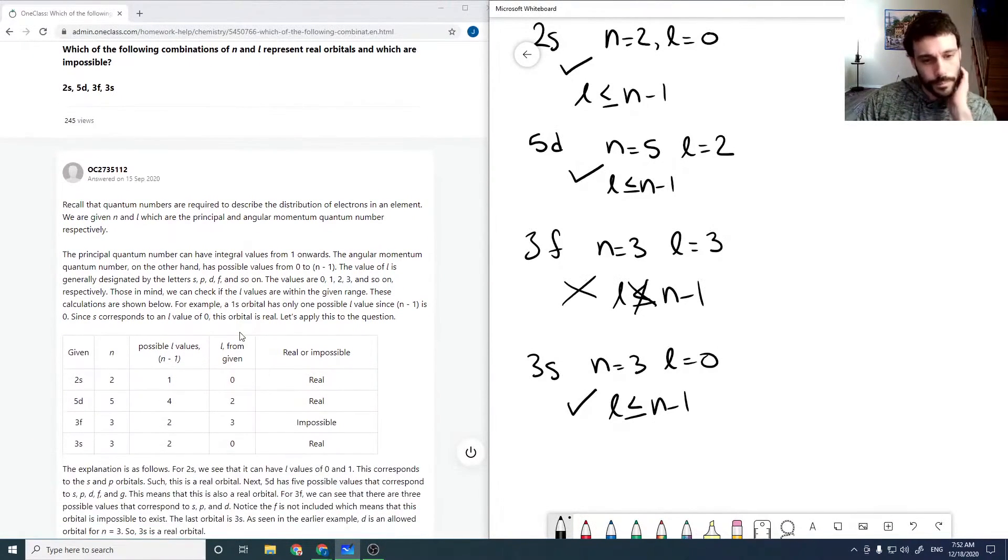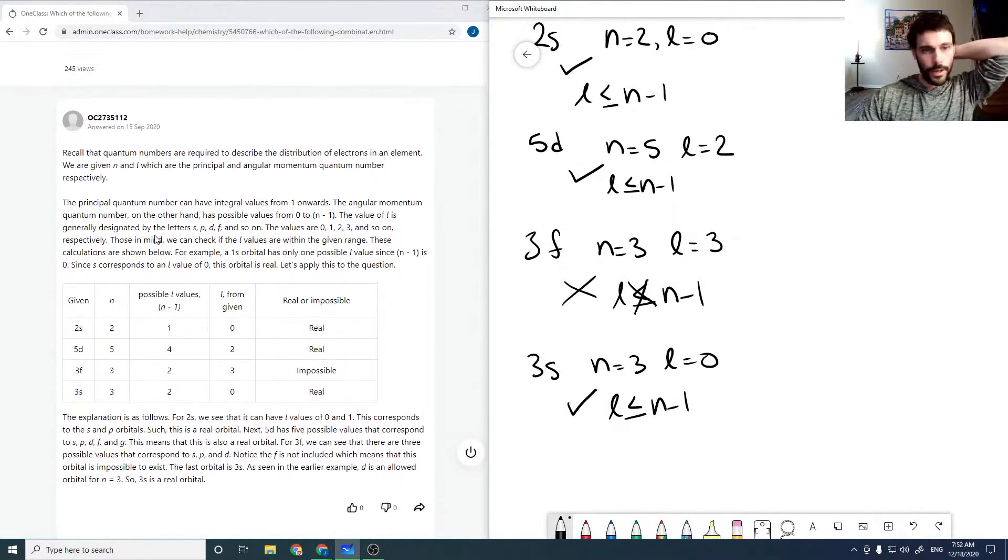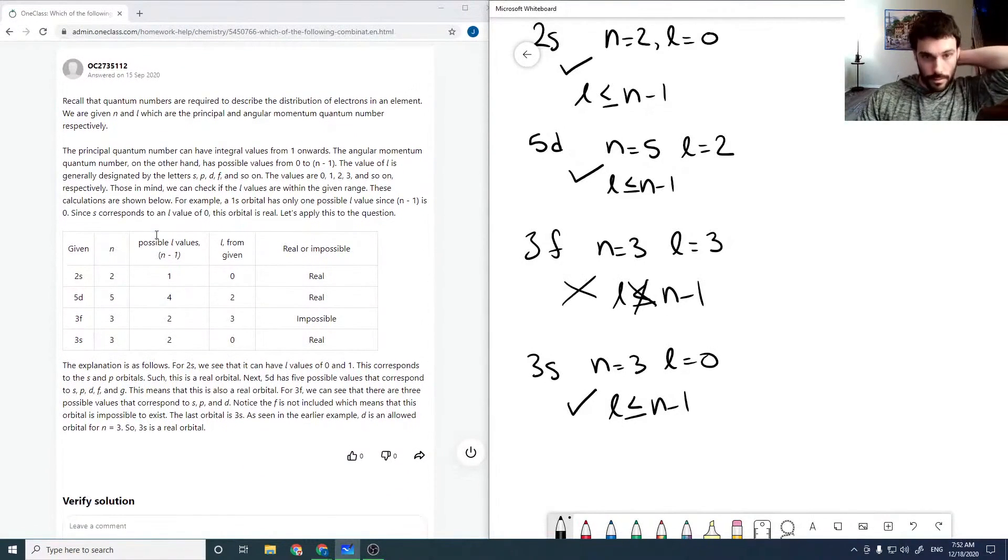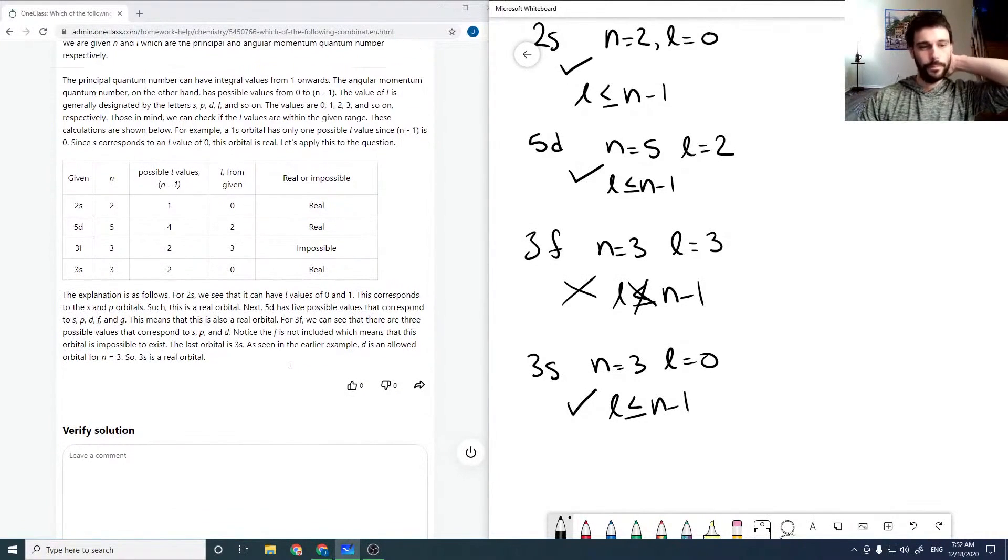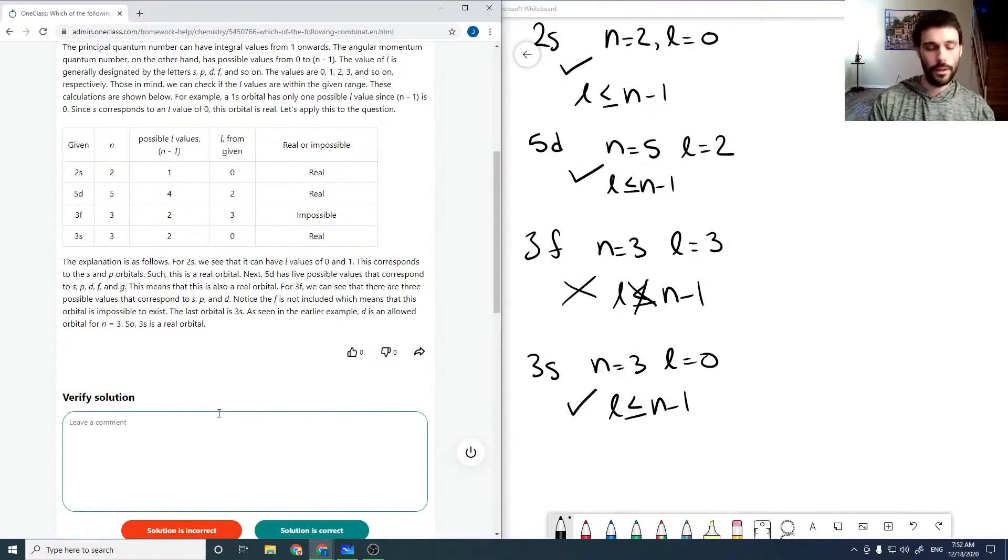Okay, so check the solution here. So just going through that. And then so the first two are real, the third one's impossible, and the fourth one's real. So that all looks good.